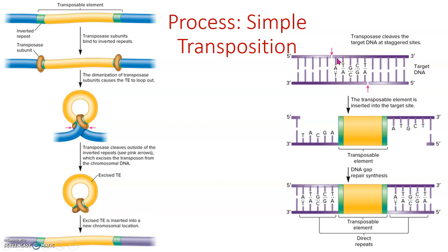When transposase cuts at the new insertion site, it makes staggered cuts — leaving overhangs. When the transposable element is inserted, those staggered sites are complementary, so when DNA repair fills in the gaps, we now have direct repeats flanking the transposon. That's how we generate the direct repeats that are a hallmark of transposable elements: a staggered cut, insertion, and repair.